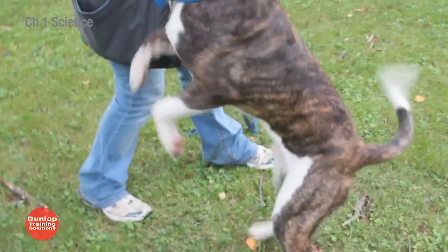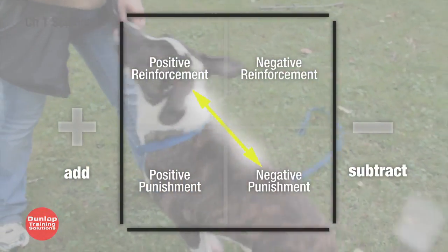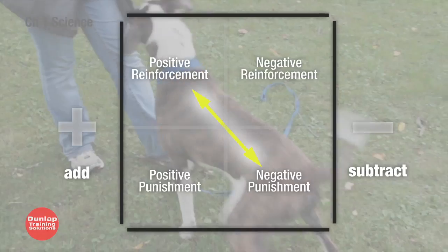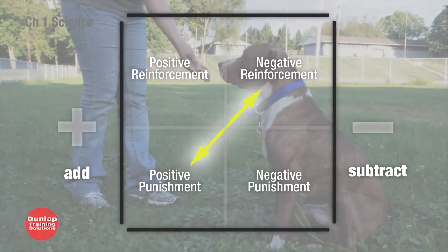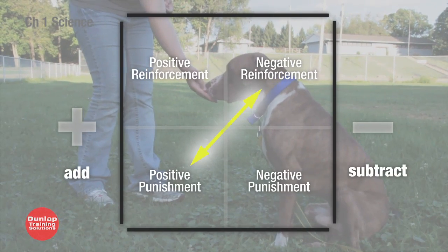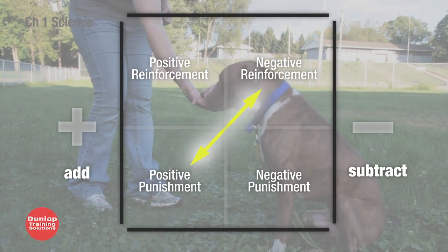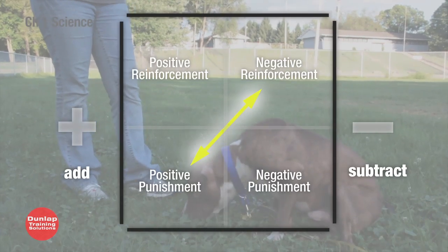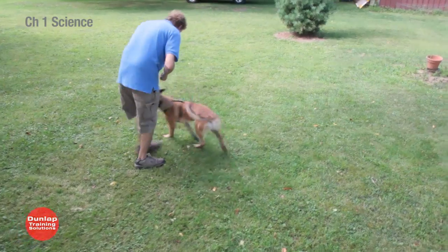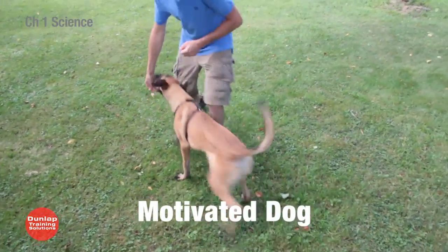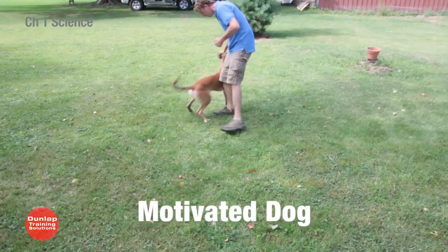With highly motivated dogs, the most effective training uses positive reinforcement and negative punishment. For dogs with low or no motivation, the most effective training techniques involve negative reinforcement and positive punishment. Our philosophy at Dunlap Training Solutions is to use positive reinforcement and negative punishment as our primary training tools. In order to effectively use these, we need a motivated dog — or need to create a motivated dog.